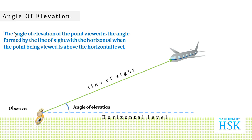We can define the angle of elevation: the angle of elevation of the point viewed is the angle formed by the line of sight with the horizontal level when the point is viewed above the horizontal level.